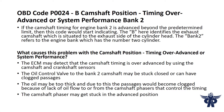If the camshaft timing for engine bank 2 is advanced beyond the predetermined limit, then this code would start indicating. The B here identifies the exhaust camshaft which is situated to the exhaust side of the cylinder head. Bank 2 refers to the engine bank which has the number 2 cylinder.